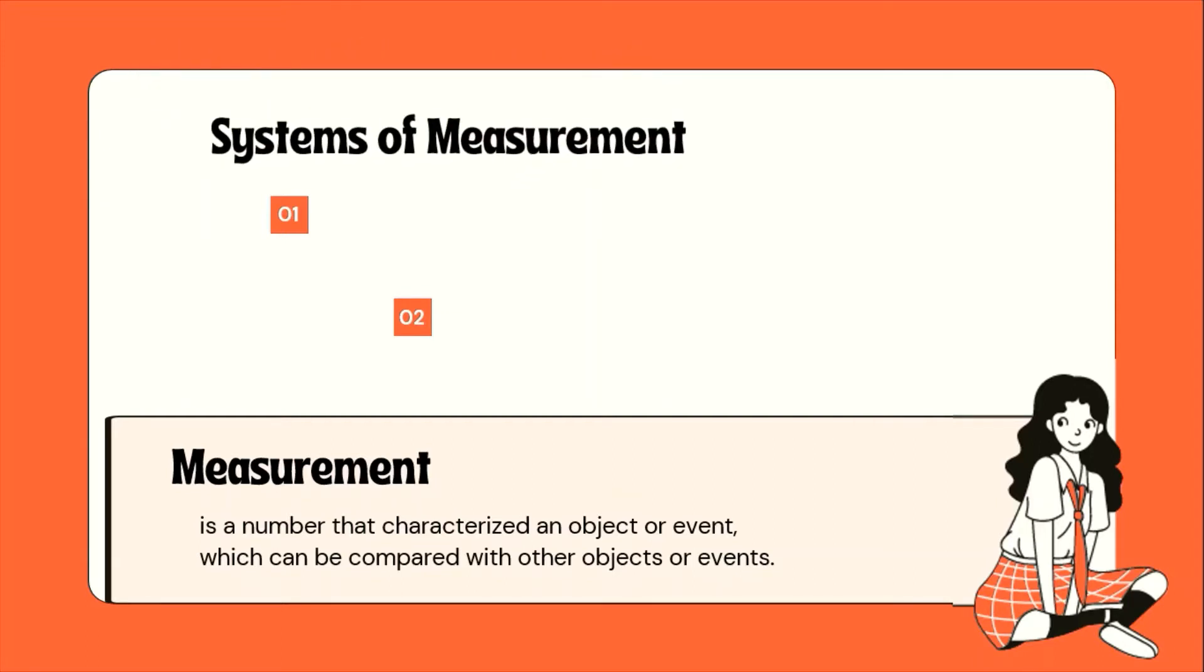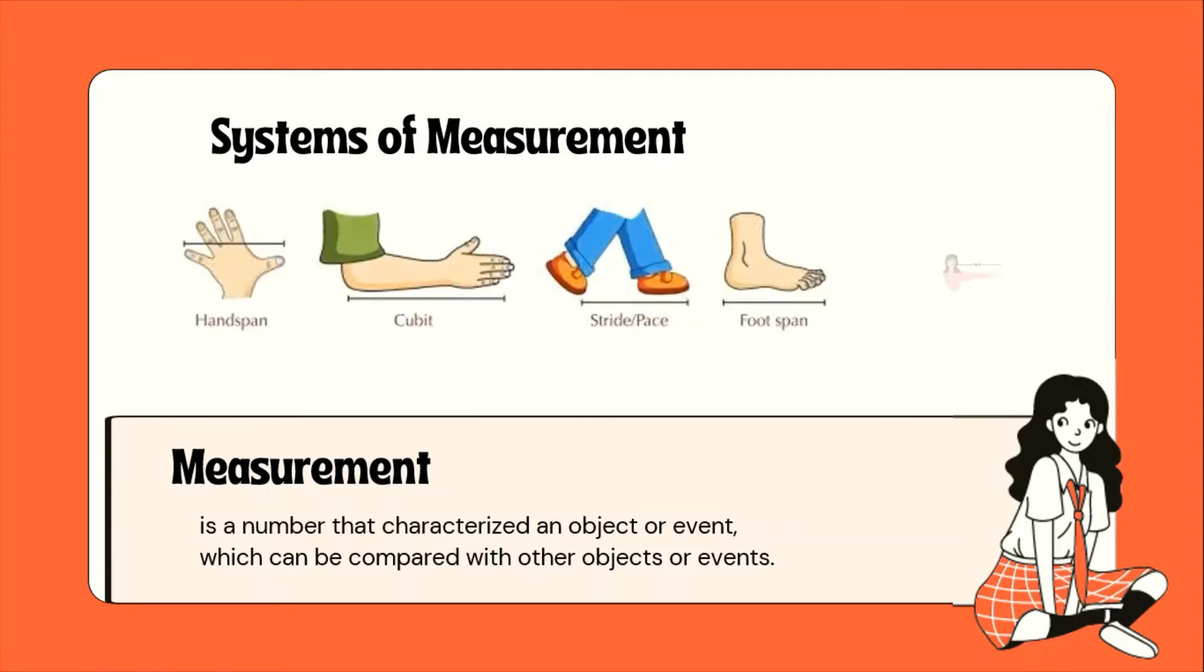Meron tayong two known systems of measurement, pero bago pa tayo magkaroon niyan, meron tayong tinatawag na non-standard system of measurement using the parts of the body. Non-standard kasi iba-iba siya. It varies from one person to another.